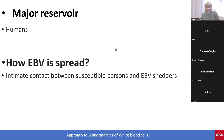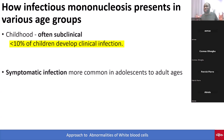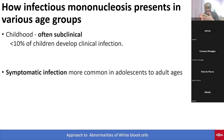How infectious mononucleosis presents varies by age group, and this is important for MCQs. In children, infectious mononucleosis is often subclinical — less than 10% develop clinical infection. However, in adolescents and adults, symptomatic infection becomes much more common. So in an MCQ asking which patient is more likely to have symptoms, choose the adolescent — for example, a 13-year-old over a 2- or 5-year-old.